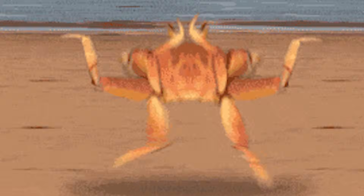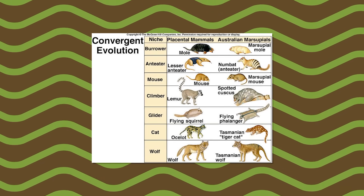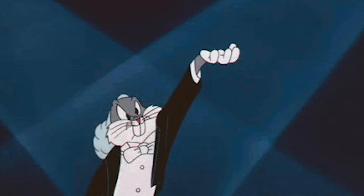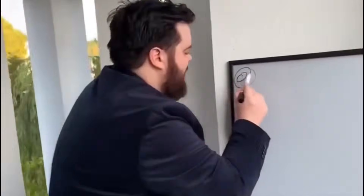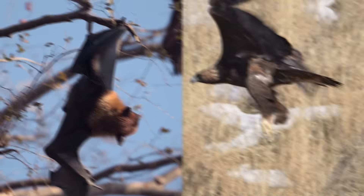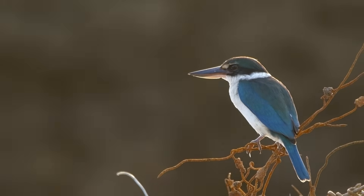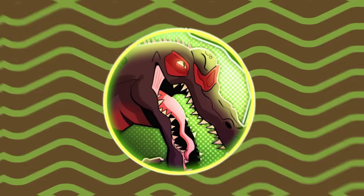Here's where crabs get weird. Convergent evolution usually happens between really different groups of animals far apart on the family tree, and maybe happens twice if you're lucky. But crabs did it at least five times, possibly more depending on which scientists you ask. And all of these happened within crustaceans — already a pretty specific group. It's not like birds and bats where you've got a mammal and a reptile both figuring out flight. It's more like five different types of birds all independently turning into the exact same shape of bird without being related to each other.